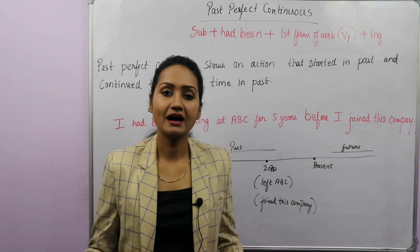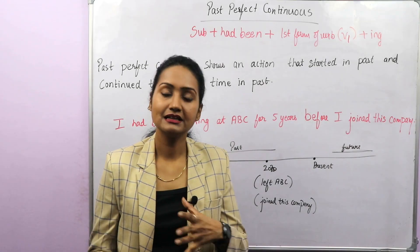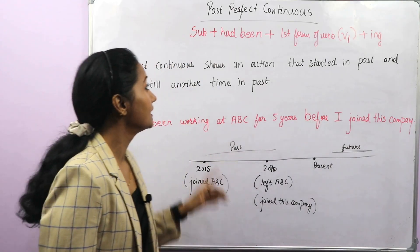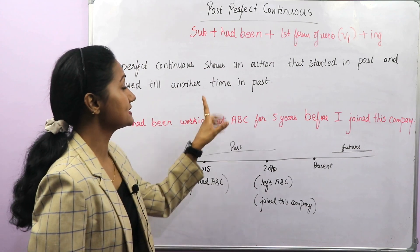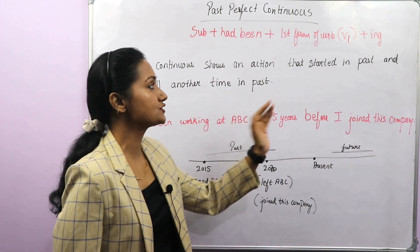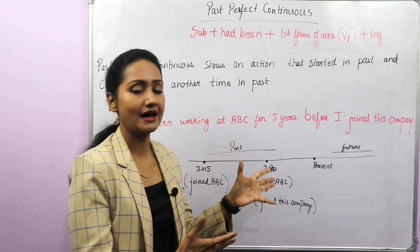Past perfect continuous tense. Let's look at the structure first. Subject plus had been plus first form of the verb plus ing.